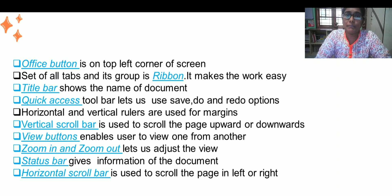Let me tell you one by one what are its uses. Office Button is usually located in the top left corner of the screen and all the set of tabs and its group is called Ribbon. Title Bar shows us the title of the document. Quick Access Toolbar lets us use Save, Do and Redo options.